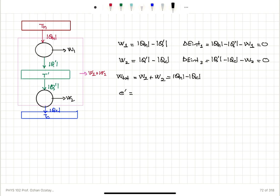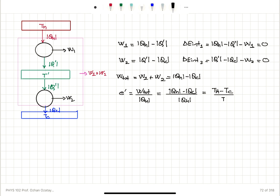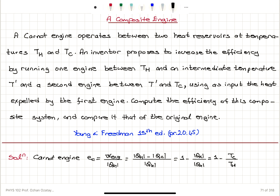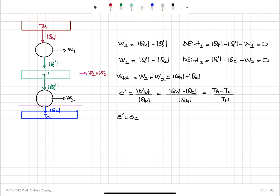What is the efficiency of this composite engine? It is the total work output divided by the amount of heat added to this composite engine. The composite engine receives heat QH, so since W_total equals QH minus QC, the efficiency is QH minus QC over QH, which equals 1 minus TC over TH. Therefore the efficiency of the composite engine is precisely equal to the efficiency of the original Carnot engine, so there is no gain by dividing this engine into two engines.